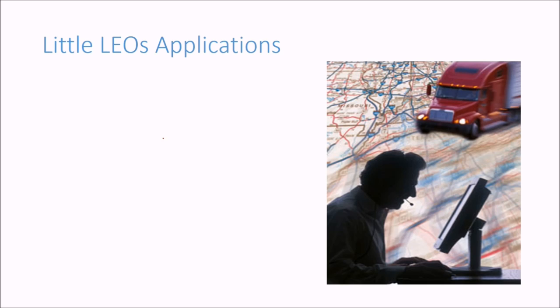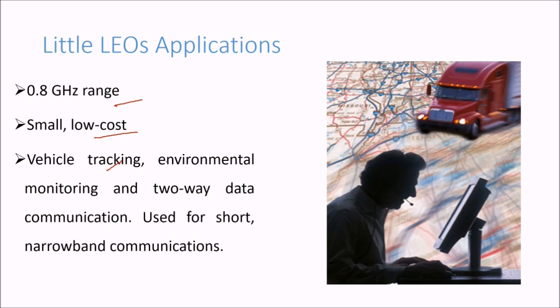What are the applications of LEO? 0.8 gigahertz range, small, low cost. Vehicle tracking, environmental modeling and monitoring, two-way data communication. Used for shorter narrowband communications.